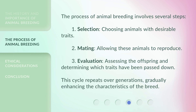The process of animal breeding involves several steps: 1. Selection — choosing animals with desirable traits. 2. Mating — allowing these animals to reproduce. 3. Evaluation — assessing the offspring and determining which traits have been passed down. This cycle repeats over generations, gradually enhancing the characteristics of the breed.